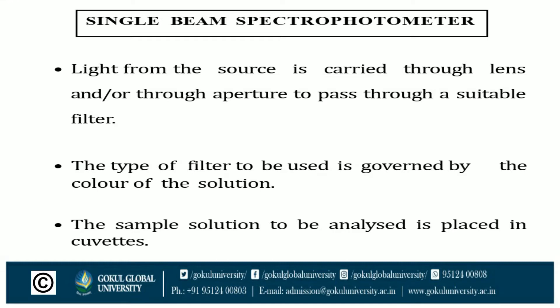In a single beam spectrophotometer, light from the source is carried through a lens and aperture to pass through a suitable filter. The type of filter to be used is governed by the color of the solution. The sample solution to be analyzed is placed in a cuvette.